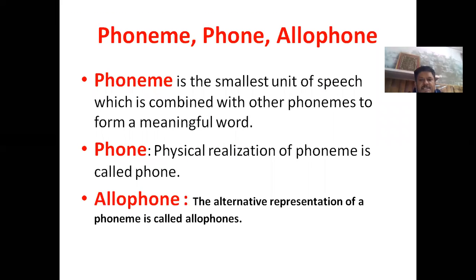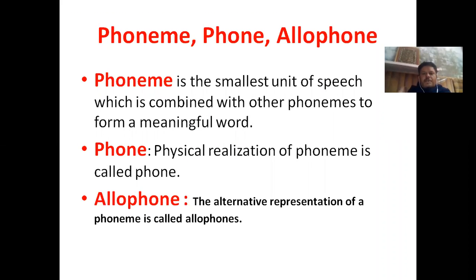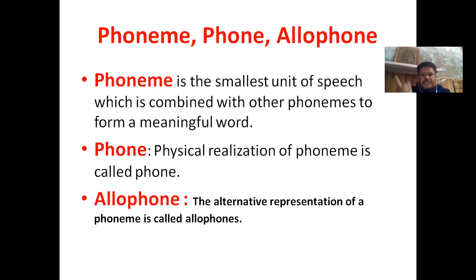A physical realization of a phoneme is called a phone. Phoneme is abstract and its physical realization is a phone. We write phoneme in square brackets and phone in slashes. So the physical realization of phoneme is called phone.